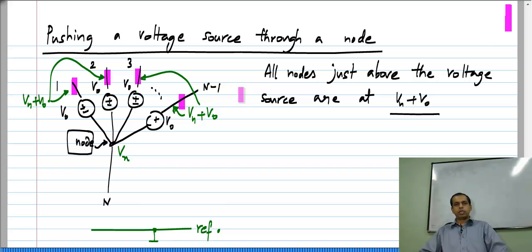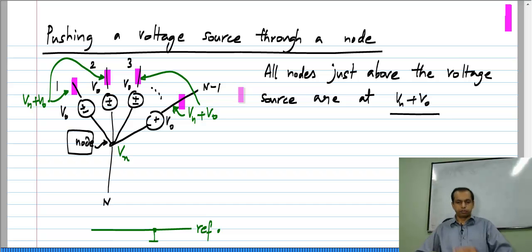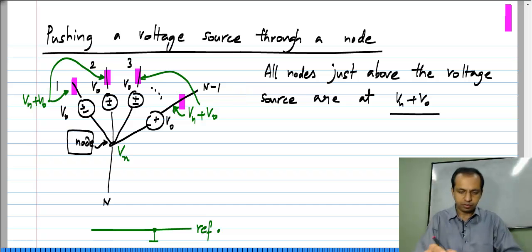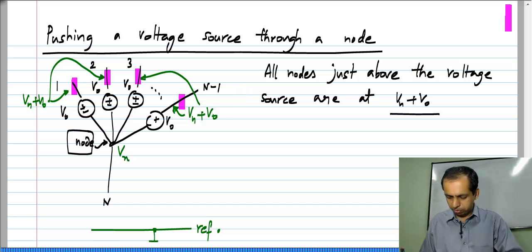It turns out that if you have different nodes with the same voltage in a circuit, you can connect them together with a wire without altering anything else in the circuit. I will show you an example.